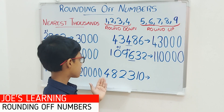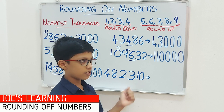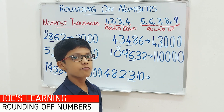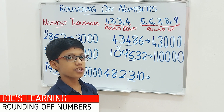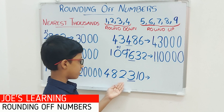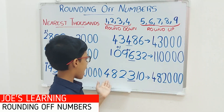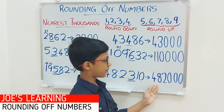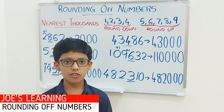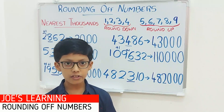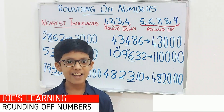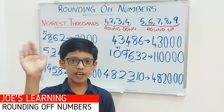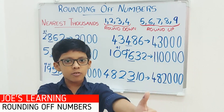Now let's move on to my last example, that is 4,82,310. First we have to look at the digit in the hundreds space — 3 is in the hundreds space. We compare it with 5: 3 is less than 5. So we have to put a 0 in the ones, tens and hundreds space and leave the remaining digits as it is. So 4,82,310 rounded off to the nearest thousands equals 4,82,000. I hope you have understood the concept of how to round off a number to the nearest hundreds and thousands. If you didn't subscribe to my channel, please subscribe now and enable the bell icon to get notifications on my latest videos. Bye friends! Thank you for watching and stay tuned for more interesting videos.